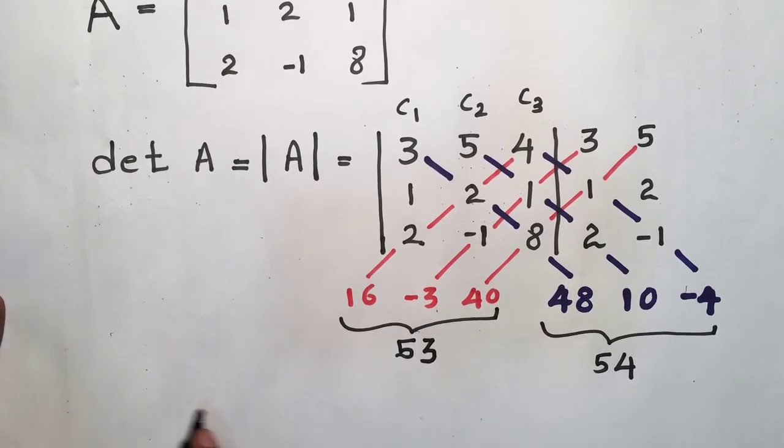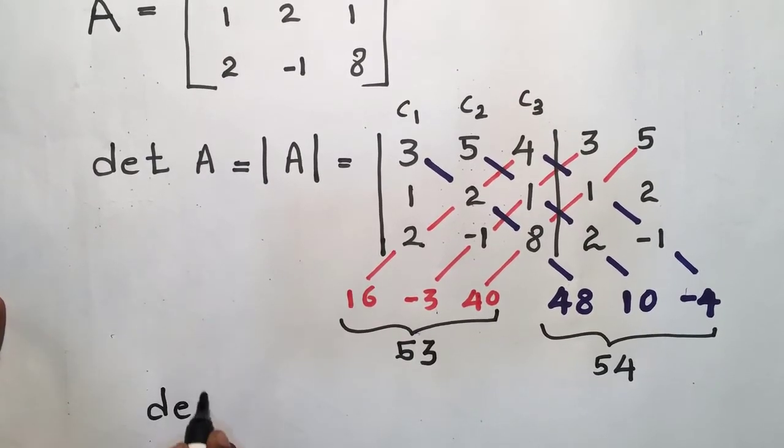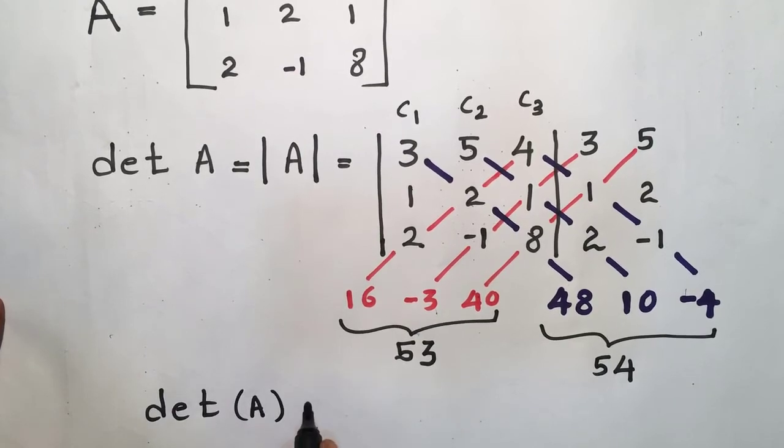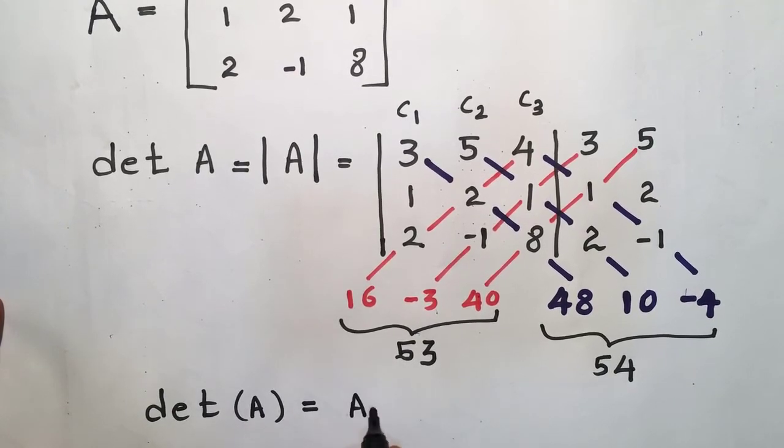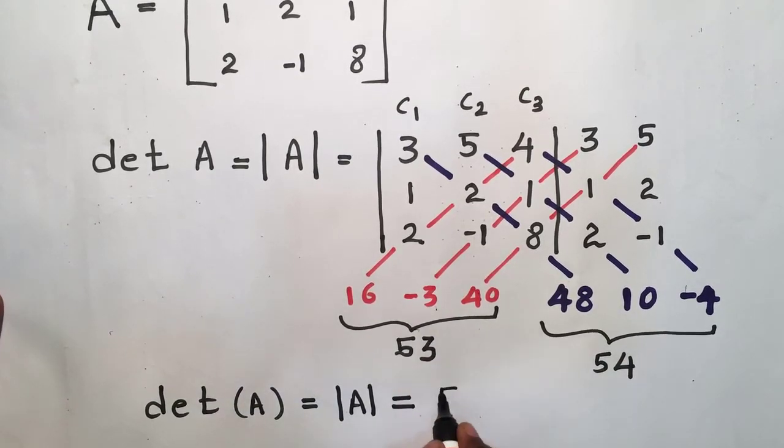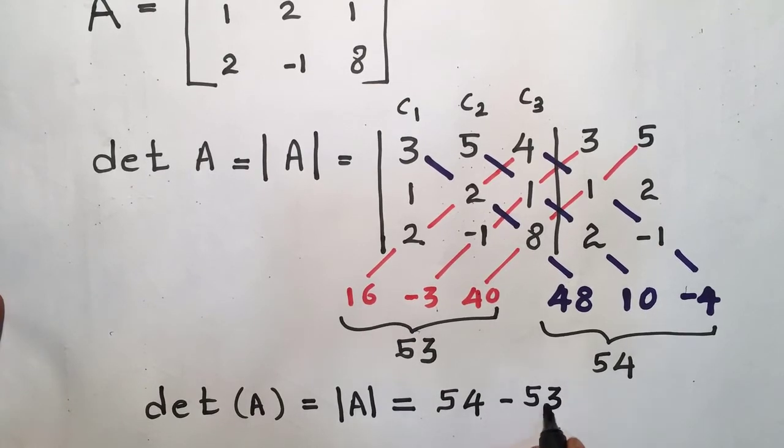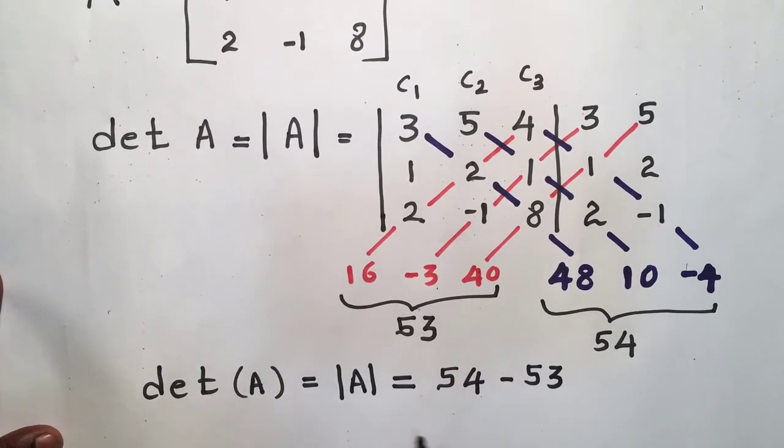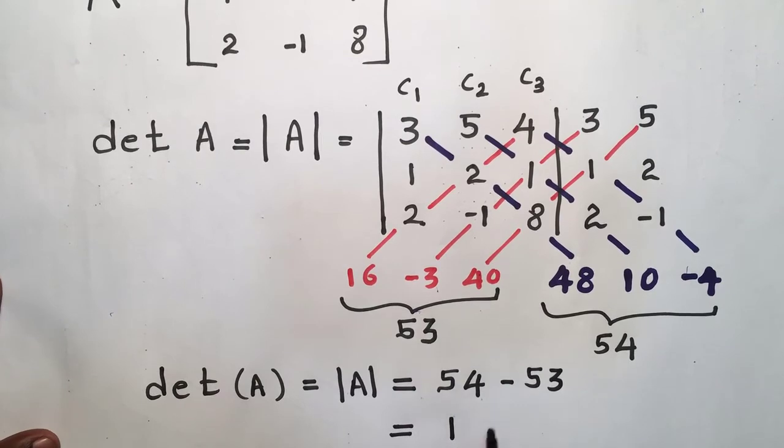So finally, I can take the determinant of matrix A like this: det A. I am going to subtract 53 from 54. That means 54 minus 53. We can get the final value. The determinant of matrix A is 1.